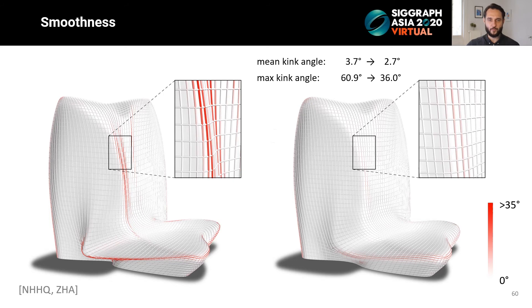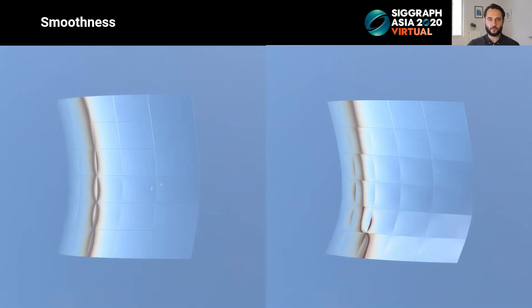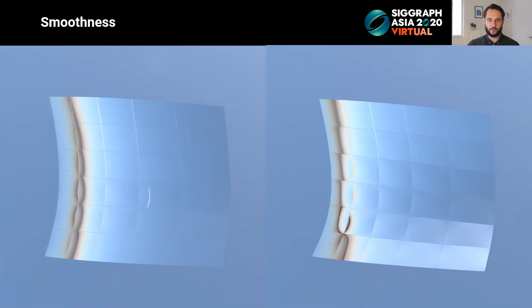This figure shows the same design under the scope of smoothness. We optimize for smooth connections between panels sharing an edge, and smoothness of the curve network. After optimization, we observe a significant drop in maximum and mean kink angles. This leads to higher visual quality of the final design, as you can see from the reflections in this rendered detail of the previous panelization.